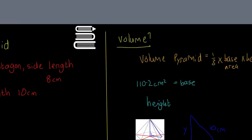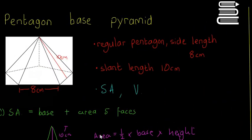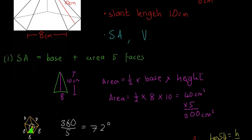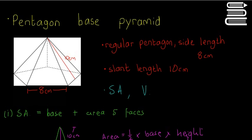That was quite a long video and a little bit tricky — the trickiest bit was probably finding the vertical height. The key method is breaking up the pyramid into the base and five faces, using the triangle area formula for the faces, breaking the pentagon base into small isosceles triangles, and finally using Pythagoras to get the vertical height for the volume. Don't forget to like and subscribe if you enjoyed the video.